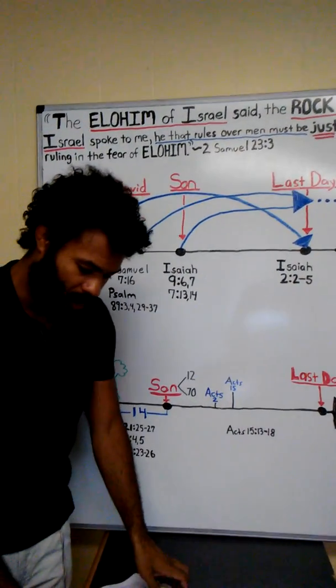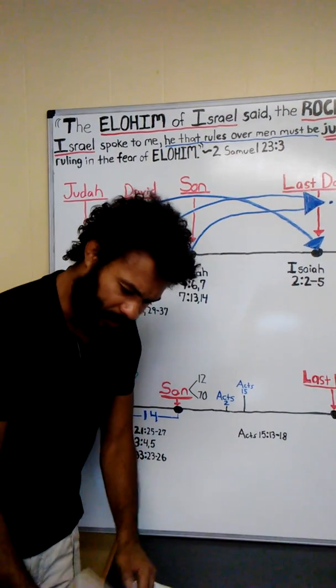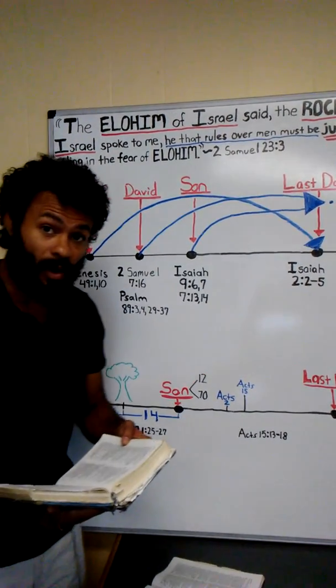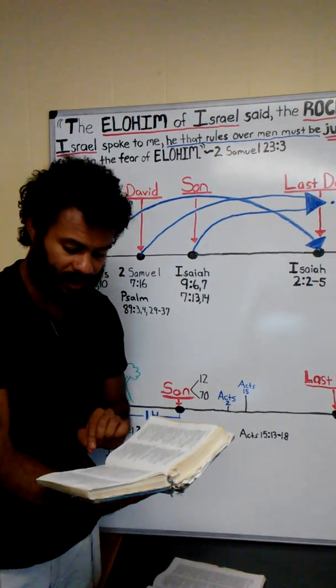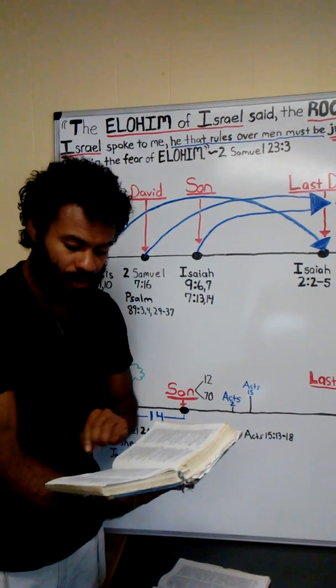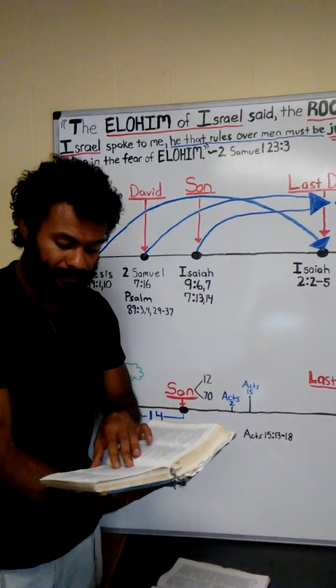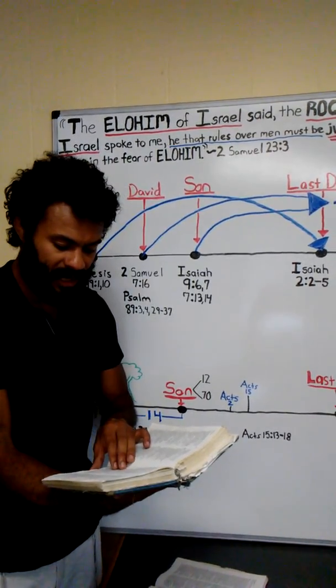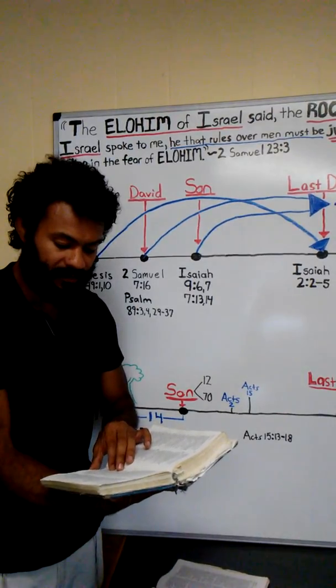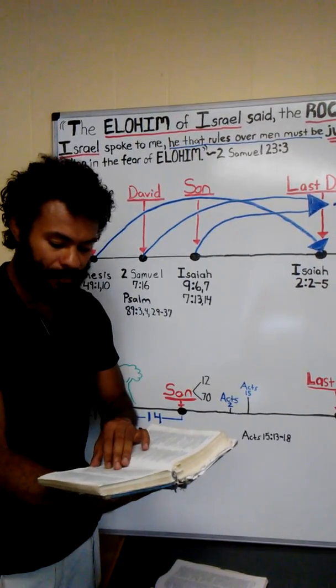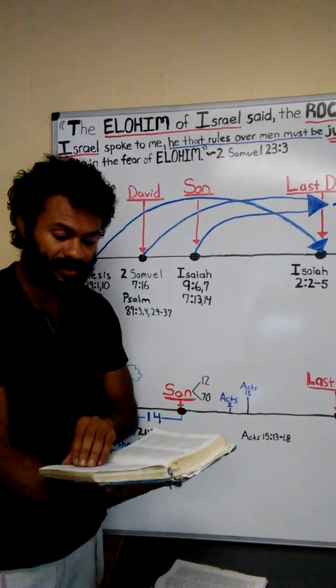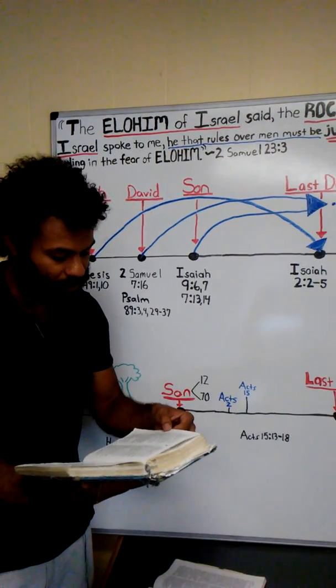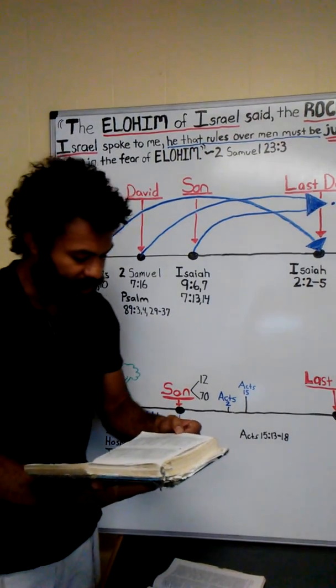I want to pick up in Psalm 89. Read the whole psalm. Starting verse 3: You said, I have made a covenant with my chosen, and have sworn by my servant David, I establish your seed forever, and shall build up your throne to all generations. Selah.